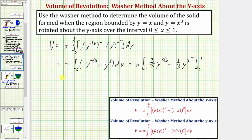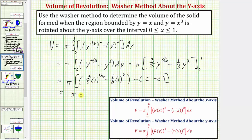Now we evaluate F(b) minus F(a). We have pi times: when y equals one, three-fifths times one to the five-thirds minus one-third times one to the third, minus zero (since both terms are zero when y equals zero). Simplifying, we have pi times the quantity three-fifths minus one-third. The common denominator is fifteen, so we get nine-fifteenths minus five-fifteenths, which equals four-fifteenths. So the volume equals four pi divided by fifteen cubic units.